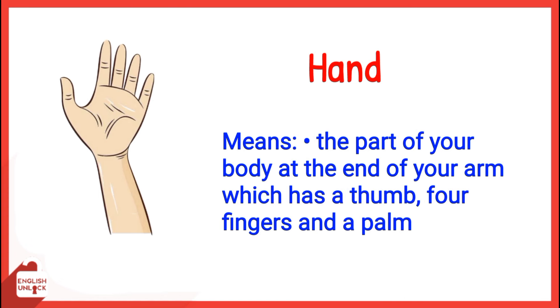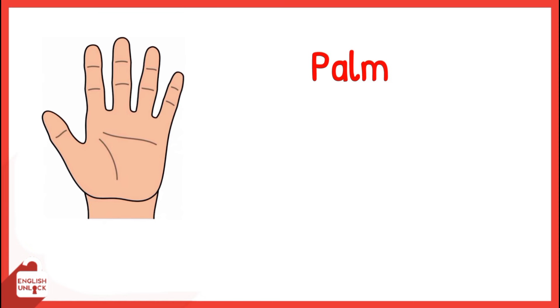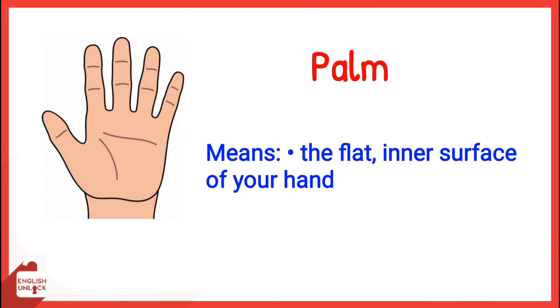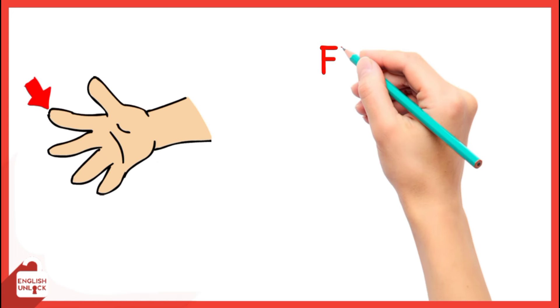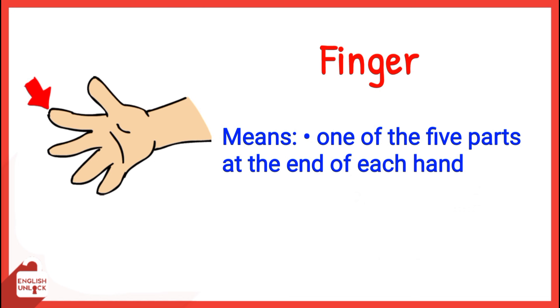Hand means the part of your body at the end of your arm which has a thumb, forefingers, and a palm. Palm means the flat inner surface of your hand. Finger means one of the five parts at the end of each hand.